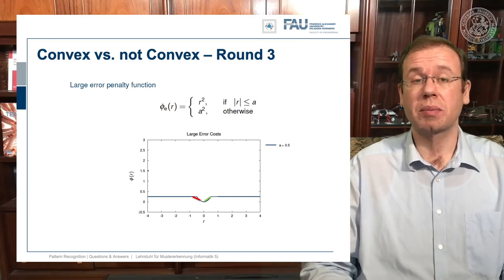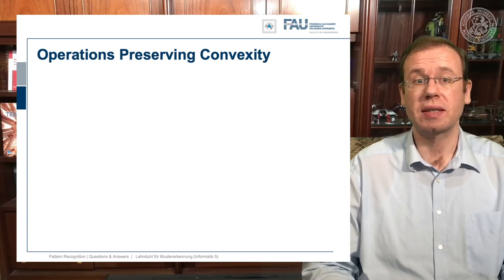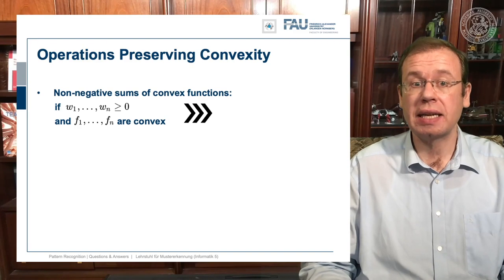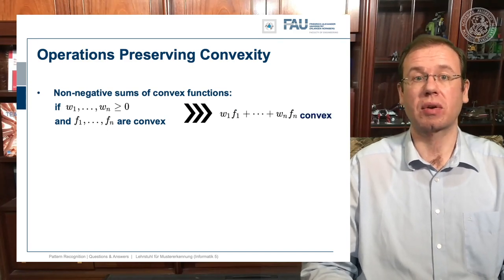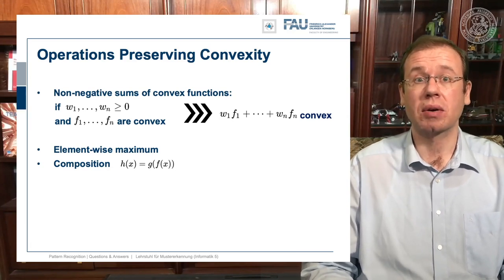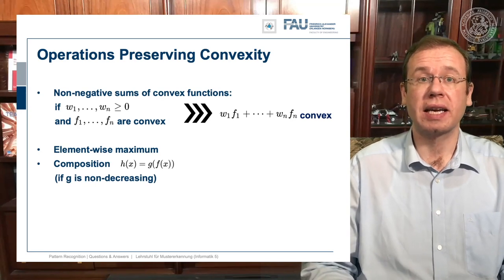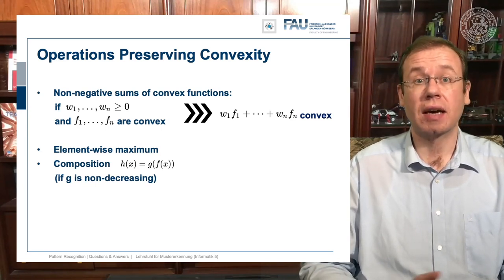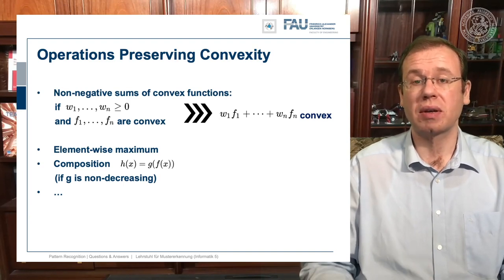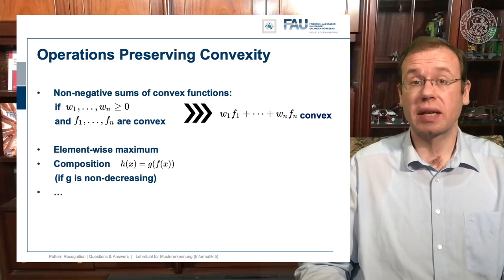Convexity is quite cool and can also be preserved. There are operations that conserve convexity — for example, the non-negative weighted sum of convex functions. If you have positive weights and a set of convex functions, then a weighted sum of them is also convex. The element-wise maximum is also a convex function. A composition — applying one function to another — can also be a convex combination, but only if g is non-decreasing. You can find more variants in your favorite math textbook on convexity; I just wanted to name these examples because they are relevant for our class.